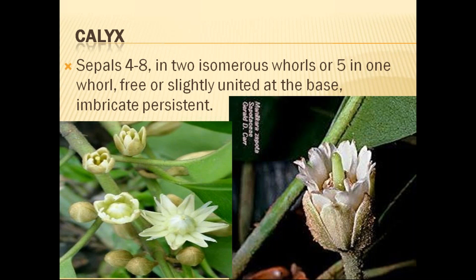The sepals are four to eight in two whorls, or five in one whorl. They are slightly united at the base, imbricate, and persistent. The arrangement of sepals in two whorls, generally four to eight in number, is one of the important characteristics of this particular family, as seen in the left side photograph.